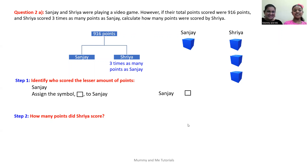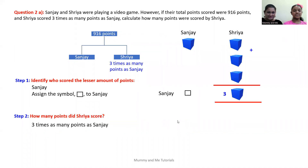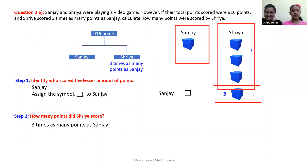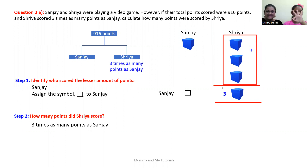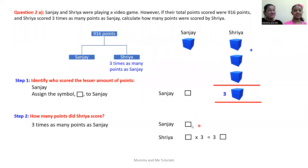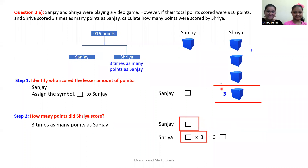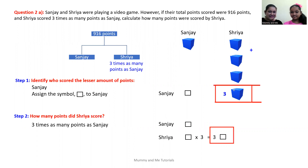Step two: how many points did Shreya score? We know that Shreya scored three times as many points as Sanjay. So if Sanjay scored one box, Shreya scored one box times three, which is three boxes — box plus box plus box equals three boxes. So Sanjay has one box and Shreya has three boxes, which equals three boxes.